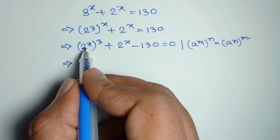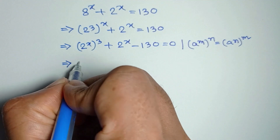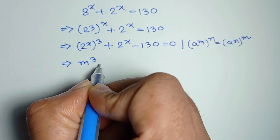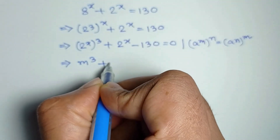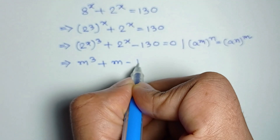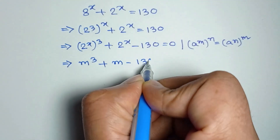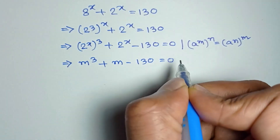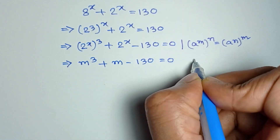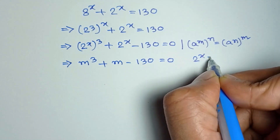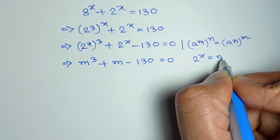Since 2 to the power x appears twice, let 2 to the power x equal m. So we can write m cubed plus m minus 130 is equal to 0, where 2 to the power x is equal to m.